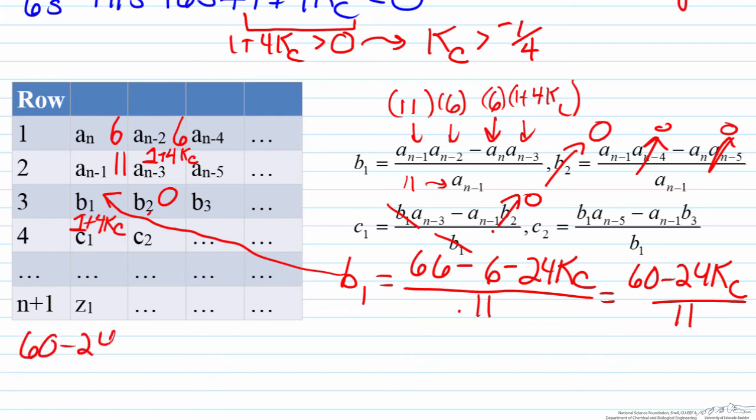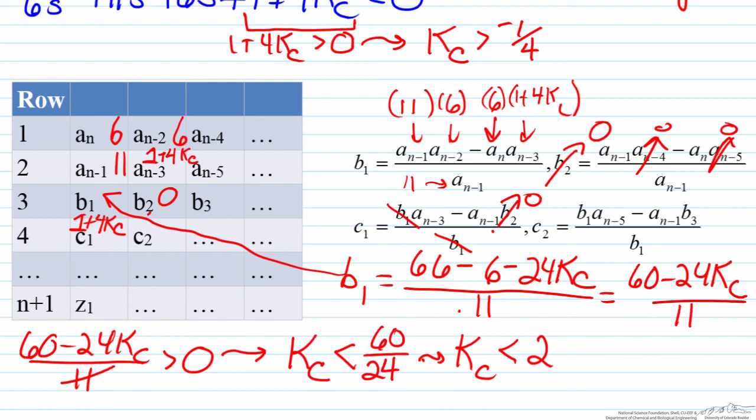Here we need (60-24KC)/11 to be greater than zero. The 11 will go away, and what this will lead us to after some math is that KC has to be less than 2.5.